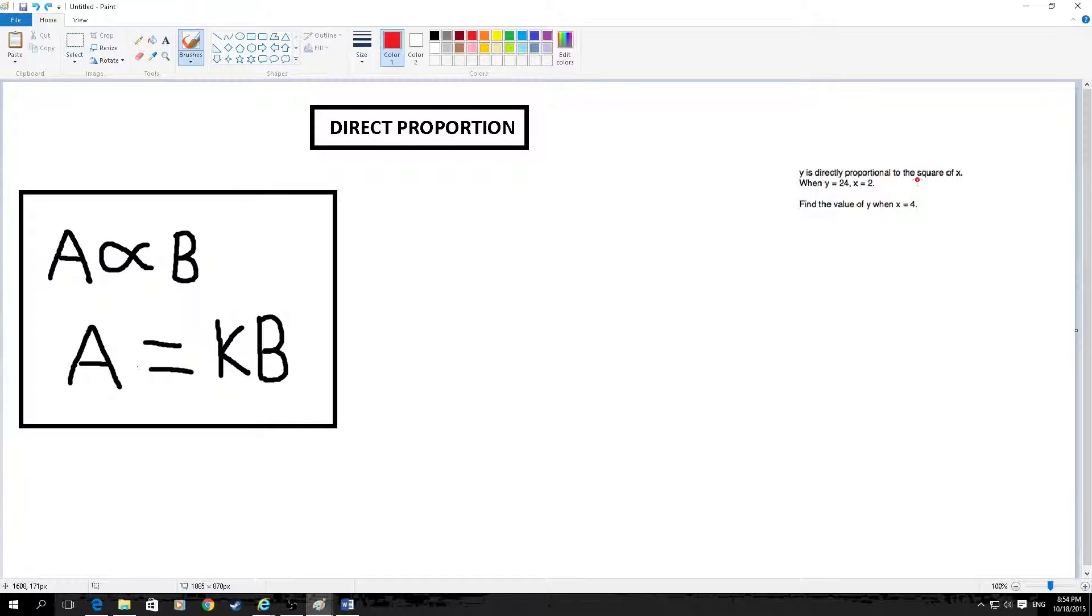So first thing you know is that it's the square of x. So if you write that down, you'll know what it is. Like that. So we know the square of x number.